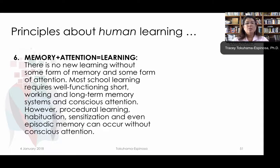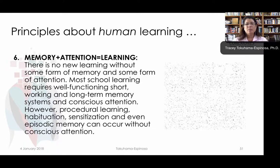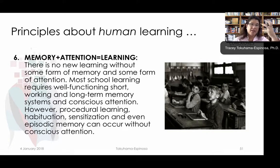A final principle has to do with memory and attention. Now this is too simple — it's not just memory and attention equal learning, there's a lot of other stuff. But as a subtraction: if you don't have memory or you don't have attention, you can't have learning. There is no new learning without some form of memory and some form of attention. Most school learning requires well-functioning short, working, and long-term memory systems and conscious attention — being able to decide you're going to pay attention to something.